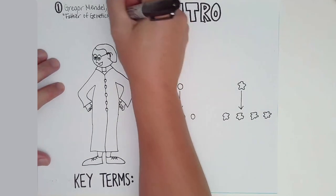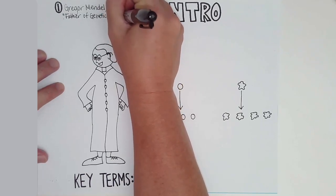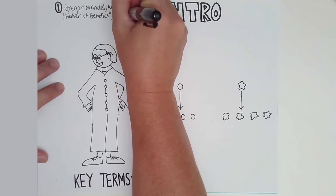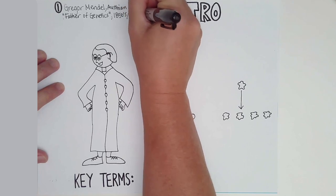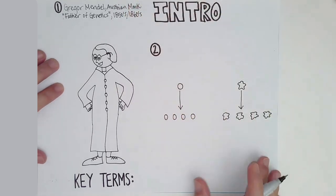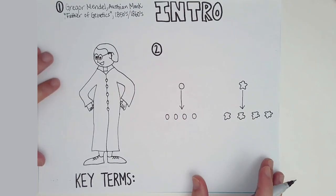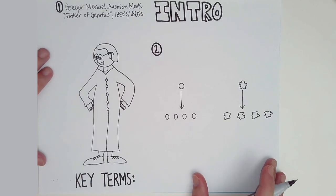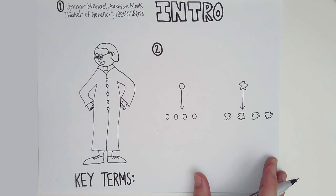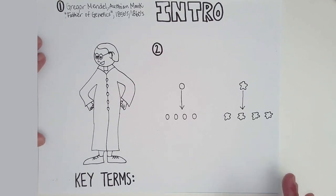He did his work in the 1850s and 60s. He published in the 1860s. It was pretty well ignored for about 40 years and then finally started to gain some traction after his death, as far as the principles that he had figured out with basic genetics.